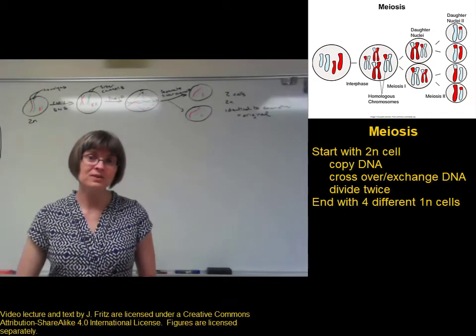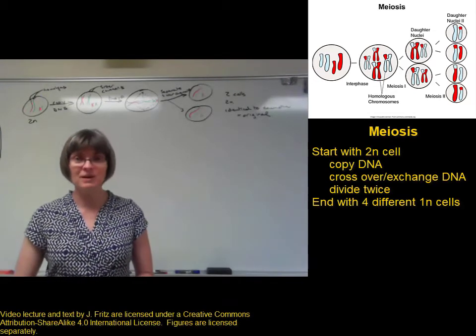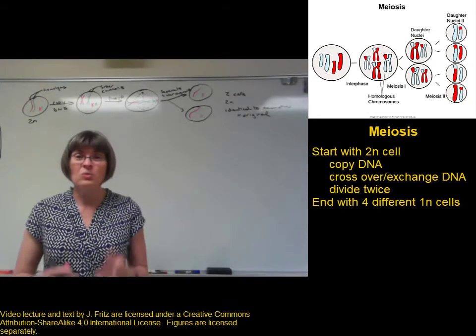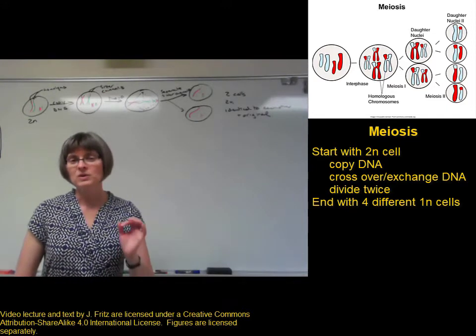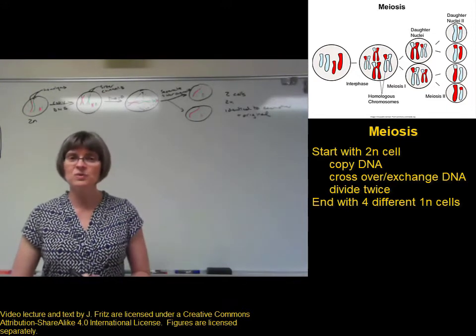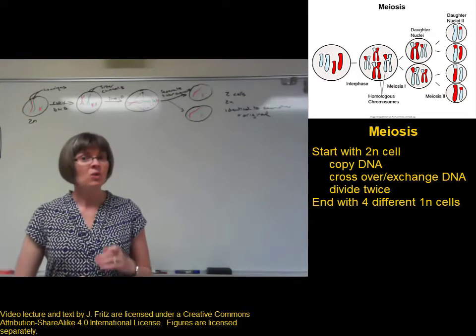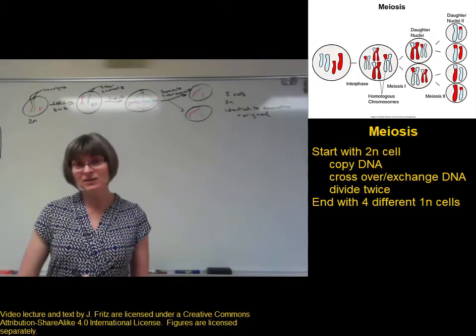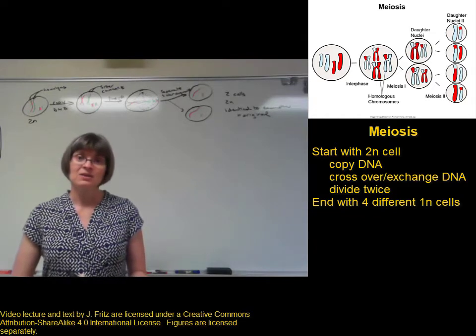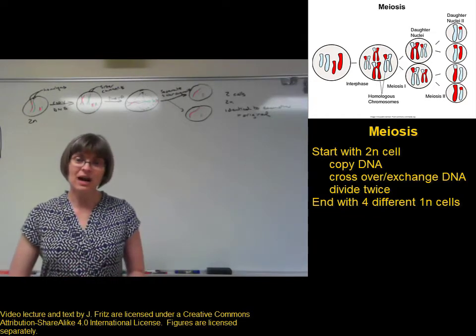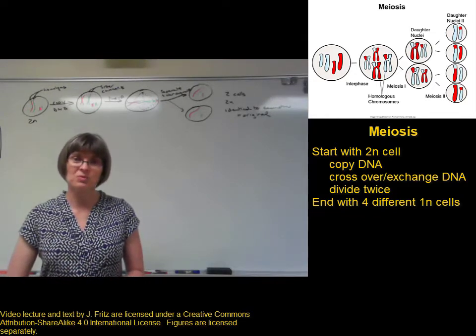The process of meiosis is pretty similar to mitosis. We start the same way — we start with a 2N cell, and we even copy the DNA the same way to make identical copies of the chromosomes.